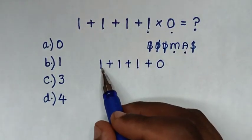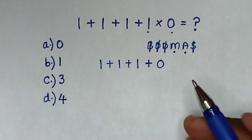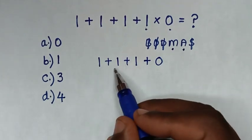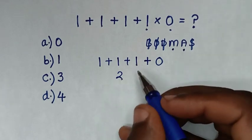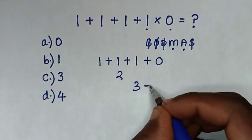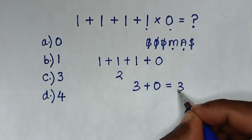Then we are left with the addition operations. So from here, 1 plus 1 is 2, then 2 plus 1 is 3, 3 plus this 0 is equal to 3.